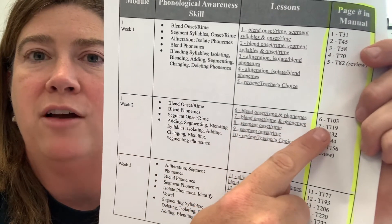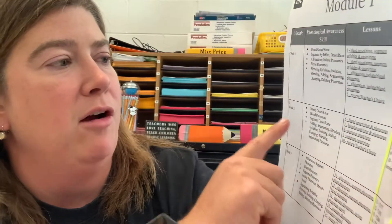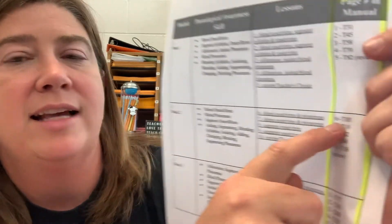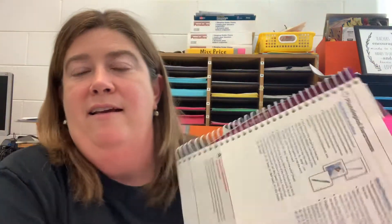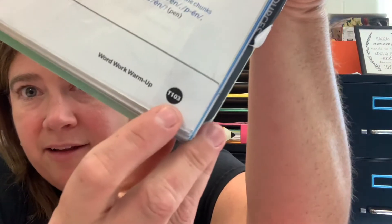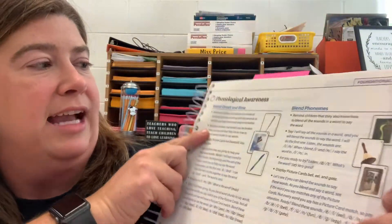I'm going to move over and look to see what page. I see right here it says T103. So then I take my teacher's guide, my teacher's manual, and I just turn until I find that. I've got it here down at the bottom — T103. Here is my phonological awareness activities.